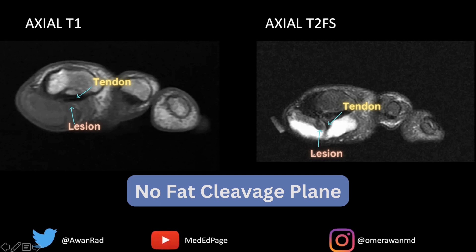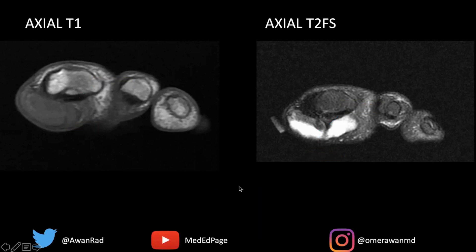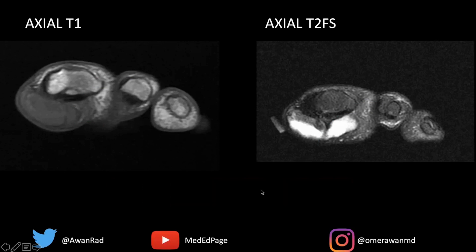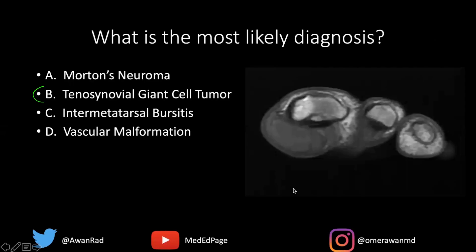That's a key component to this diagnosis, which makes tenosynovial giant cell tumor the correct diagnosis here, because of its intimate association with the flexor tendon.